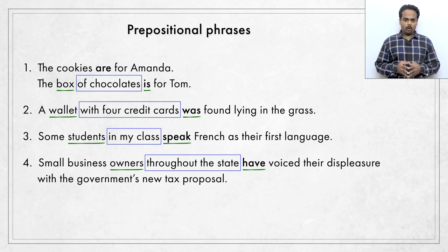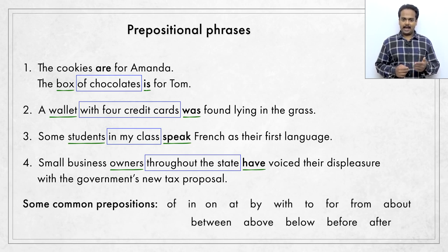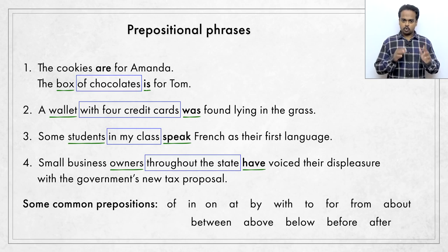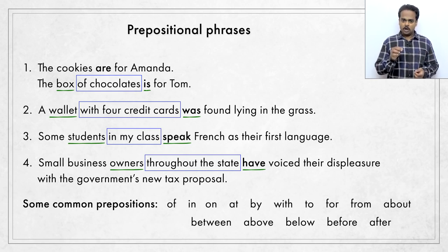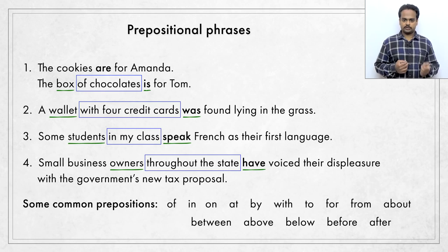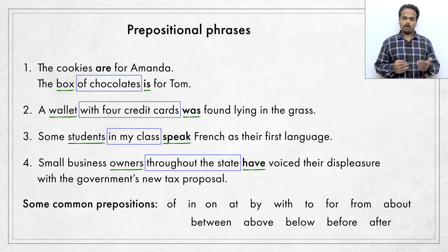Now the important question is, how do we identify prepositional phrases? The first step is to know the most common prepositions in English. These are words like of, in, on, at, by, with, to, for, from, etc. When you see a preposition in a sentence, it will always be part of a phrase — of chocolates, with four credit cards, in my class, throughout the state, and so on. If such a phrase occurs before the verb in a sentence, it will act just like an adjective to give information about a noun. So identify that noun — box, wallet, students, owners, etc. If the noun is singular, add S to the verb. If the noun is plural, don't add an S. If the verb is be, choose the correct form: am, is, are, was, or were.